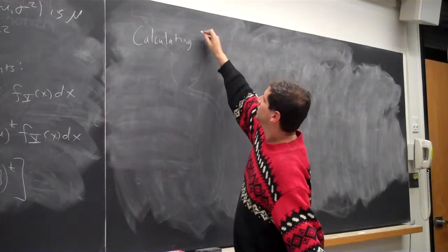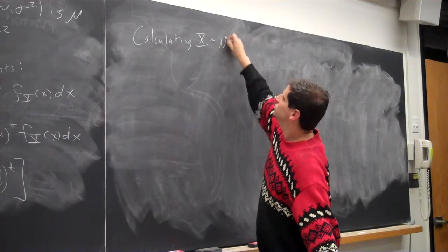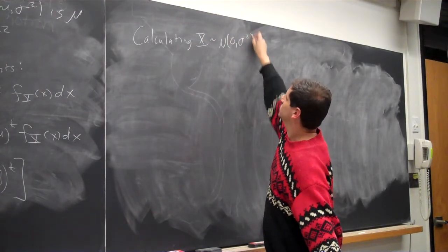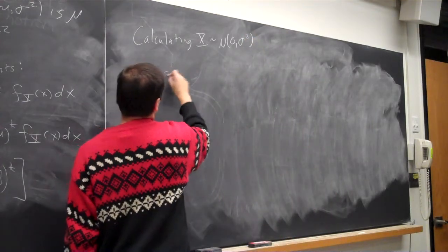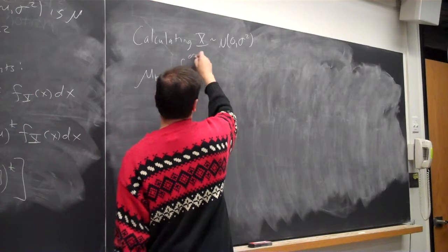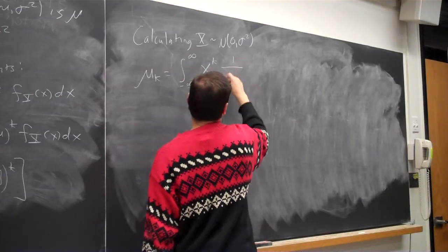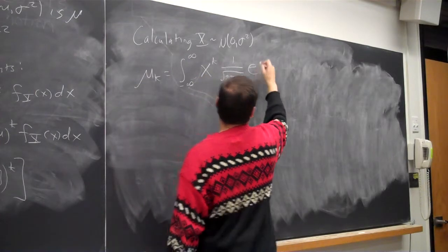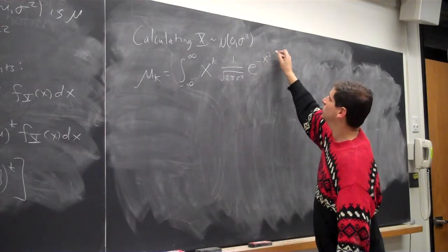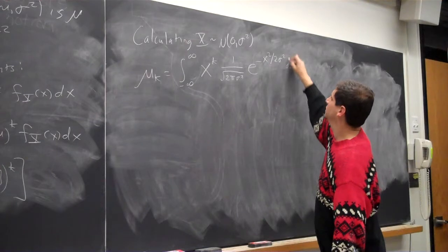Calculating x when it's normal, zero sigma squared. So mu k is equal from minus infinity to infinity, x to the k, 1 over the root of 2 pi sigma squared, e to the negative x squared over 2 sigma squared dx.